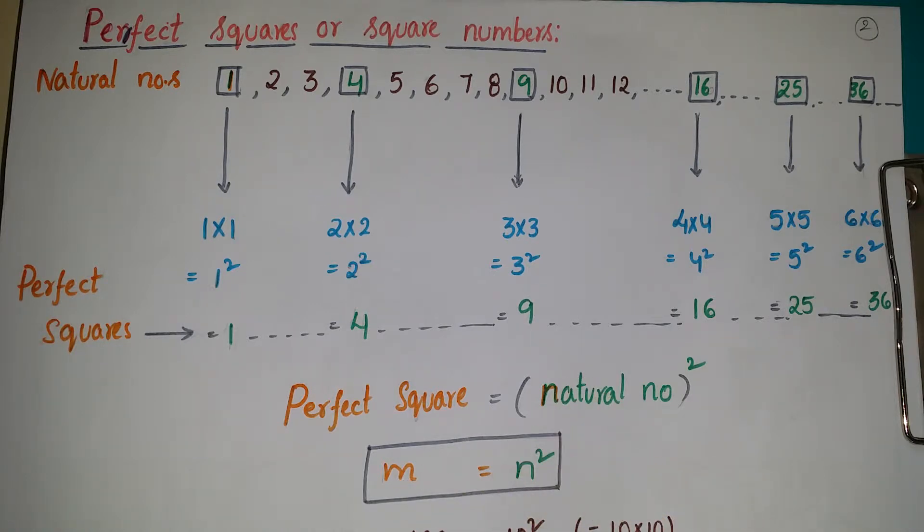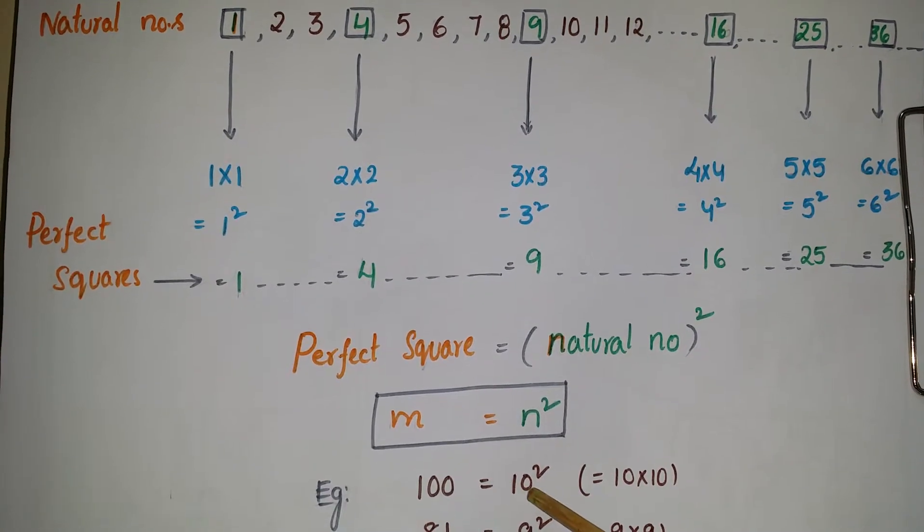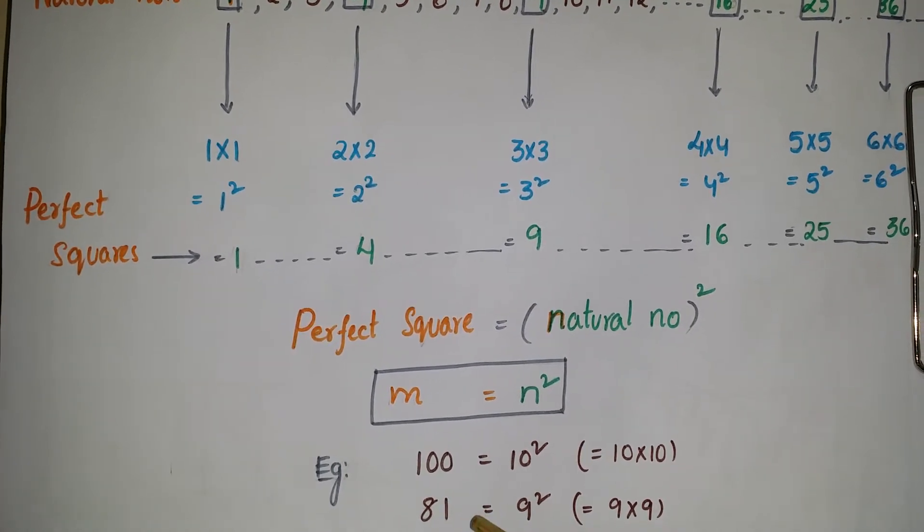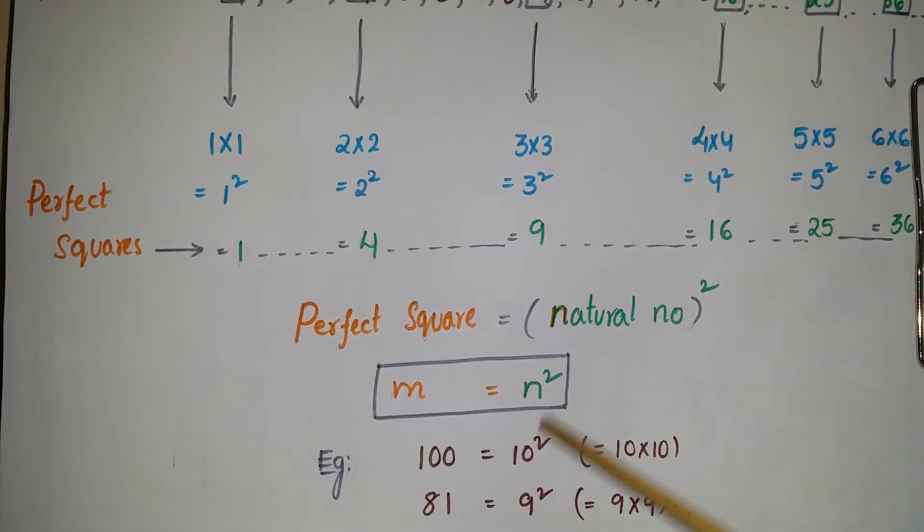See these examples: suppose 100, if you take 100 we can write as 10 into 10, so that is 10 square. So 100 is a perfect square. 81 also we can write as 9 into 9, so 81 is also a perfect square, 9 square.